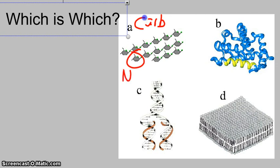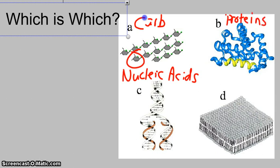C here is the nucleic acids. B here is a protein — pictures of proteins look like a jumbled-up ribbon; they're folded in all kinds of shapes so they can do all those things. And D here is lipids. Another word for lipids — we often call them fats, but in this class we're going to refer to them as lipids.